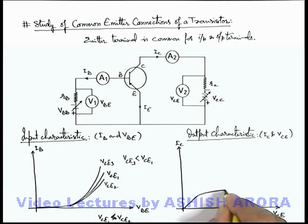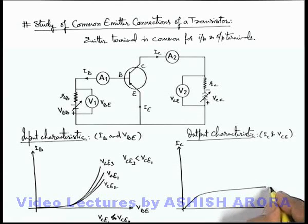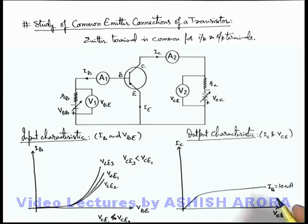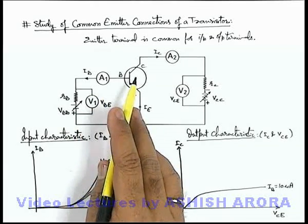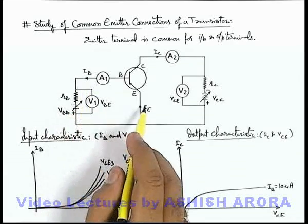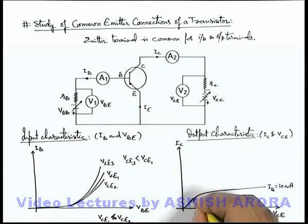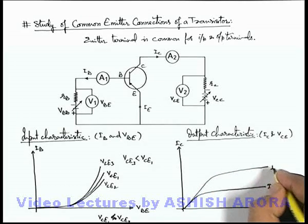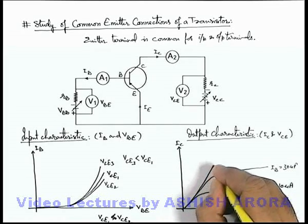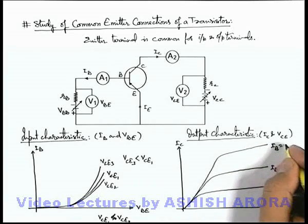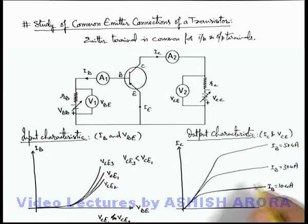So the graph will look like this: when the value of base current is say 10 microamperes, which is very small, the collector current will rise very slowly. If we increase the value of base current, the emitter current will also proportionately increase, and on a slight increase in base current the collector current will increase significantly. This curve is plotted at base current equal to say 30 microamperes, and if we further increase it to 50 microamperes, a significant difference in collector current can be seen on changing the base current.